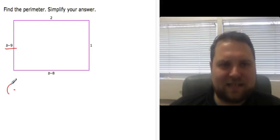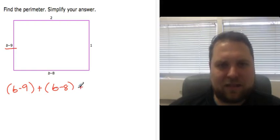So pick a side to start from. I'll start from b minus 9, b minus 9 plus, and then just go around and get all the sides, b minus 8 plus 1 plus 2.